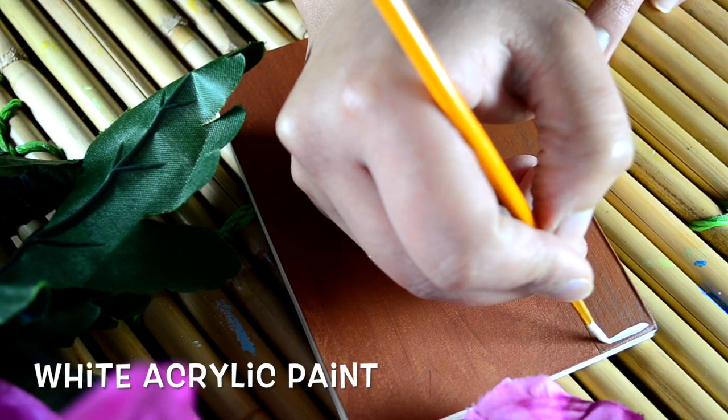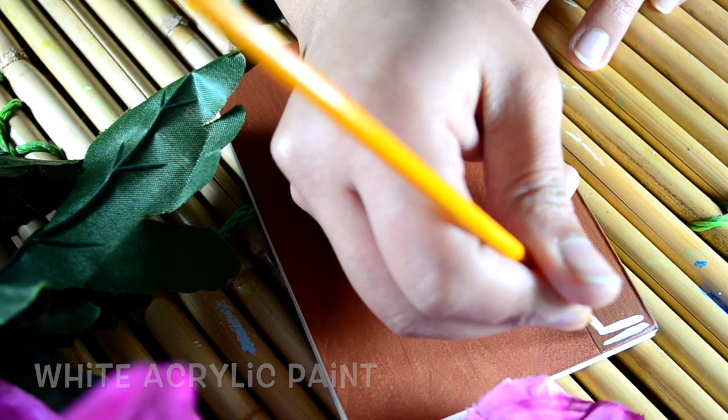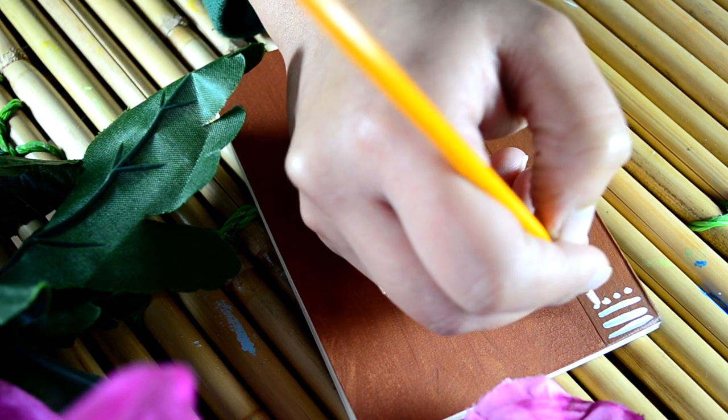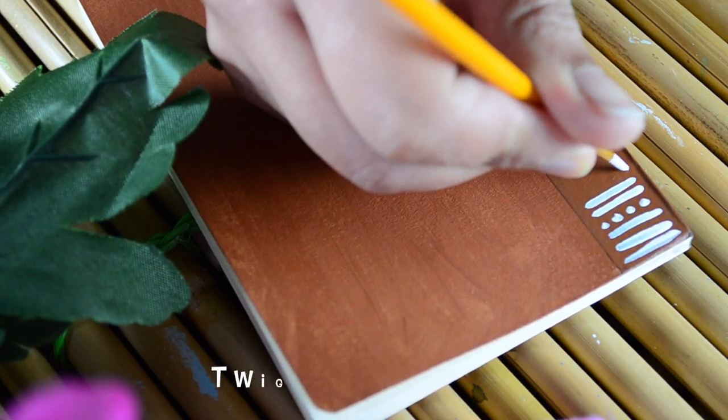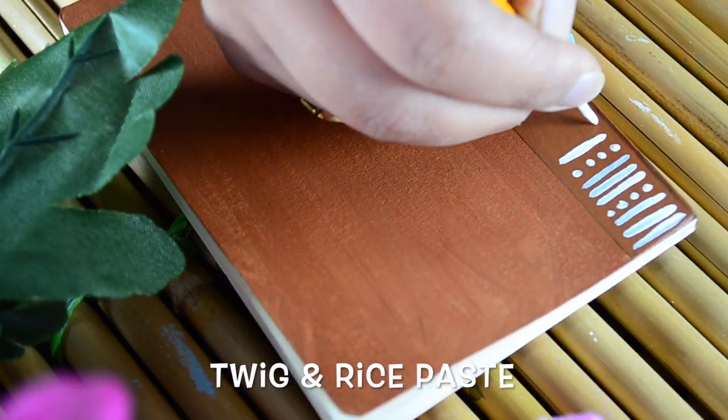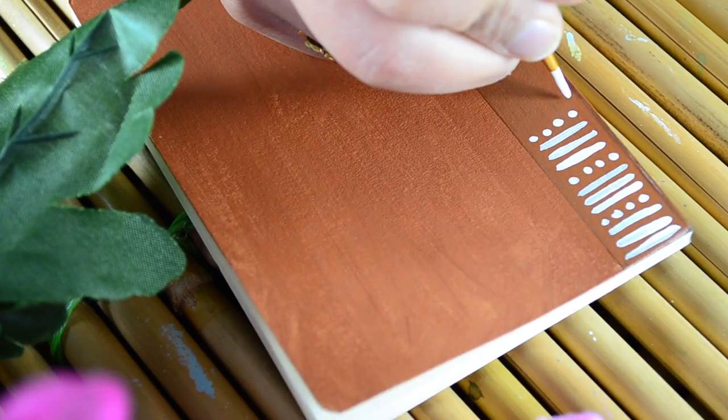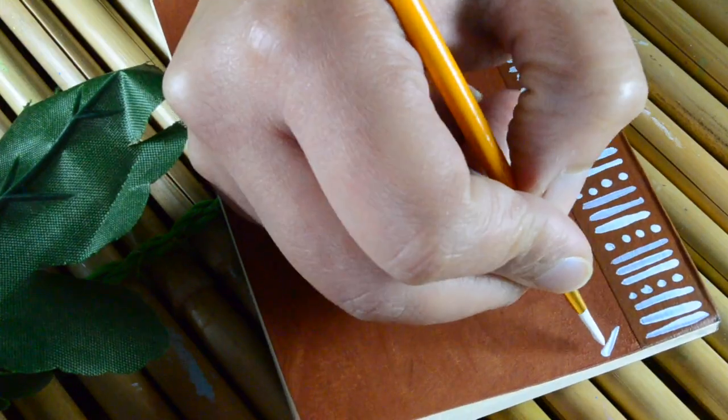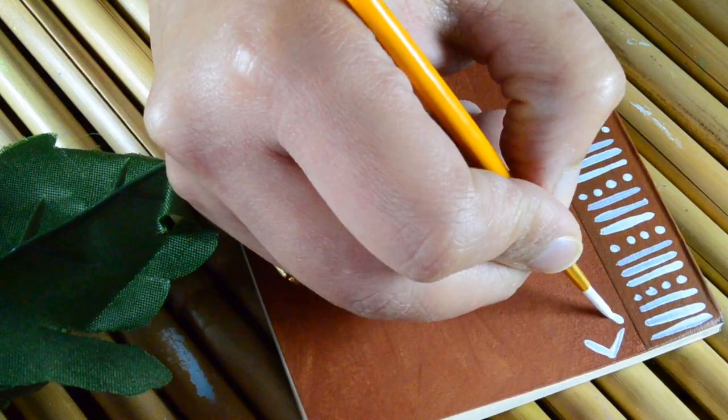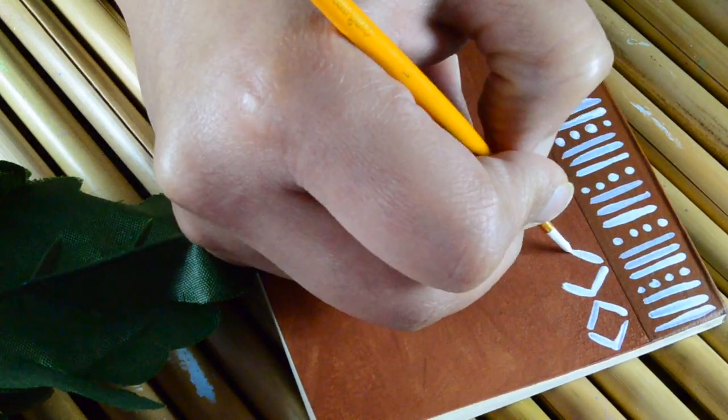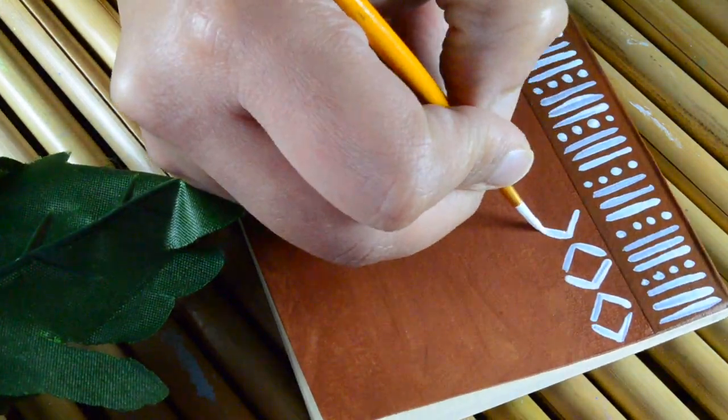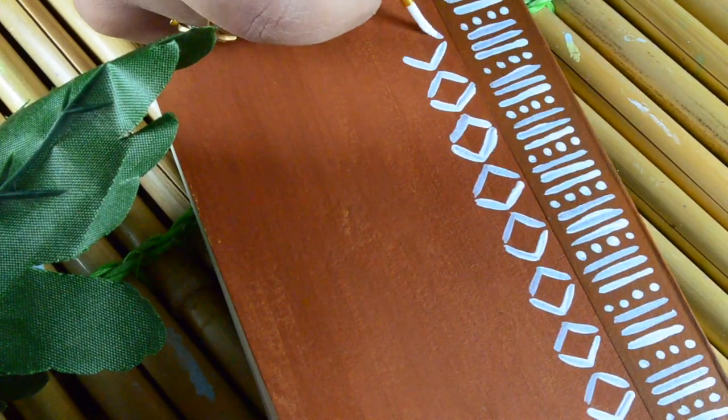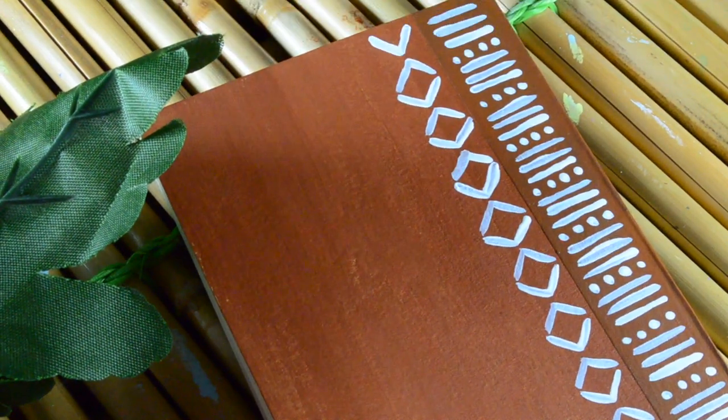Next, using some white acrylic paint and a small round brush, I'm going to be doodling some design onto this background. In old times, people used twigs and mostly rice paste to create designs on walls to decorate their homes. So don't worry if your designs are not symmetrical or not in a straight line, because that gives it a hand-painted raw look and it will look very nice at the end. And likewise I'll doodle all over this notebook cover.